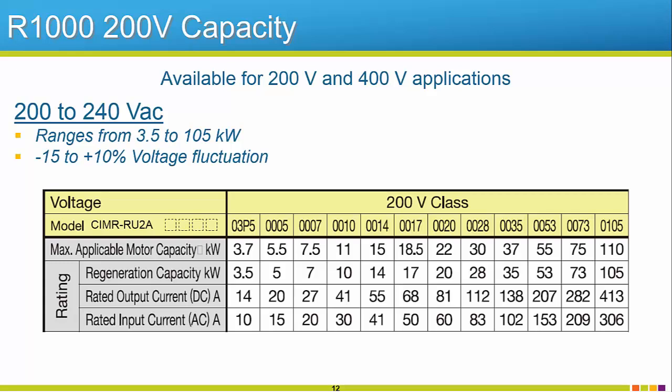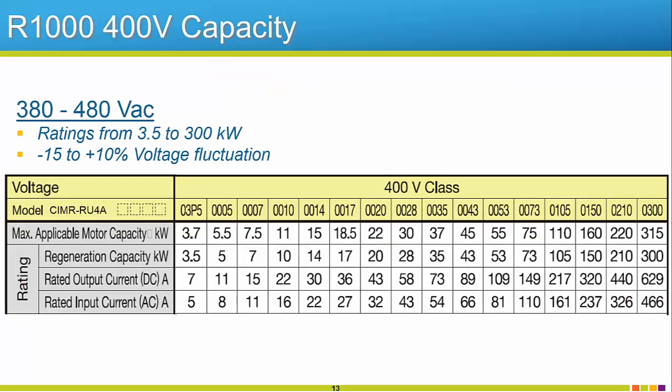The R1000 will be released for both 200 volt and 400 volt supplies. The 200 volt class is rated for 200 to 240 volts AC. The ranges vary from 3.5 kilowatts up to 105 kilowatts. A maximum voltage deviance of minus 15% to plus 10% is allowed. For the 400 volt class, this allows for a 380 volt input all the way up to 480 volts max. This class features a broad spectrum and capacities varying from 3.5 kilowatts to 300 kilowatts. The same minus 15% to plus 10% voltage tolerance exists.